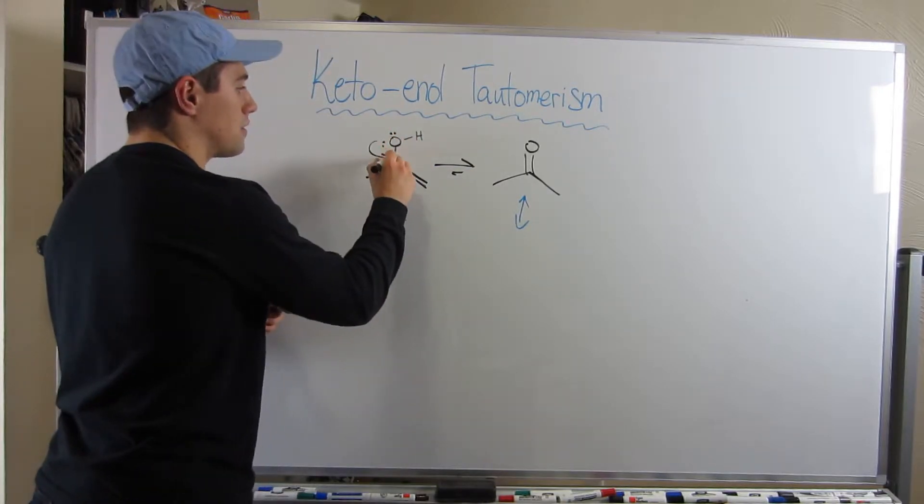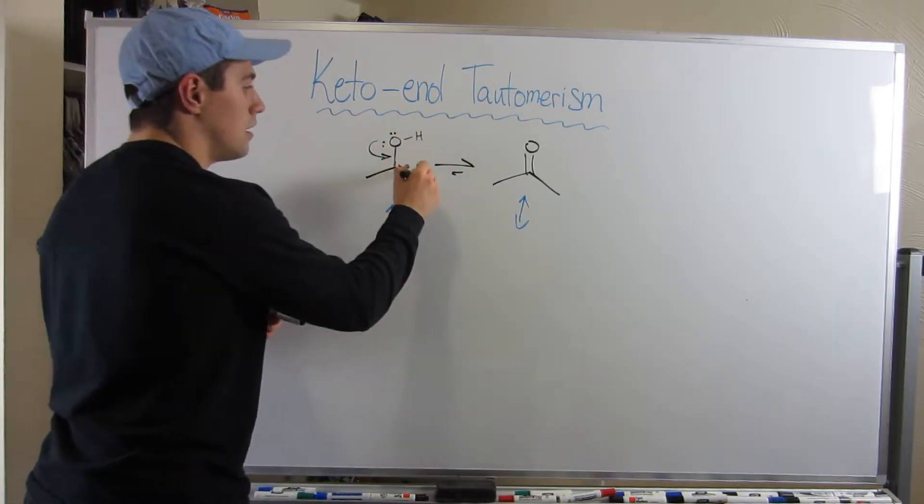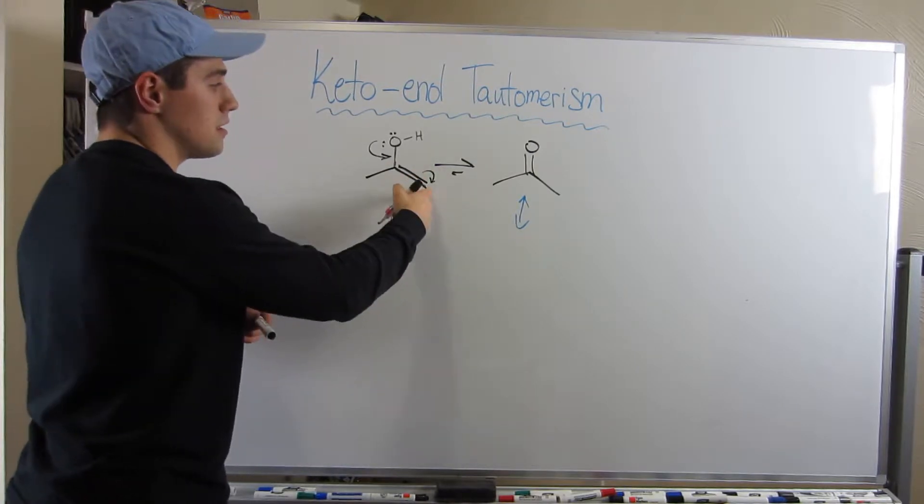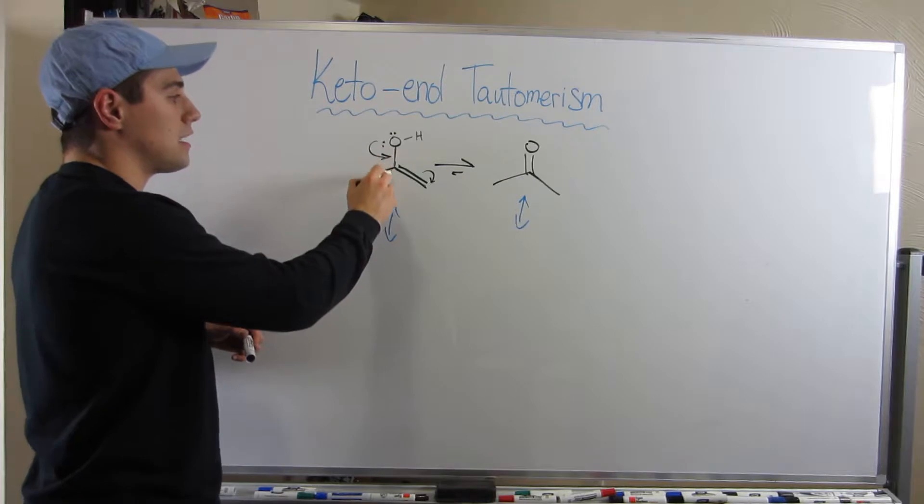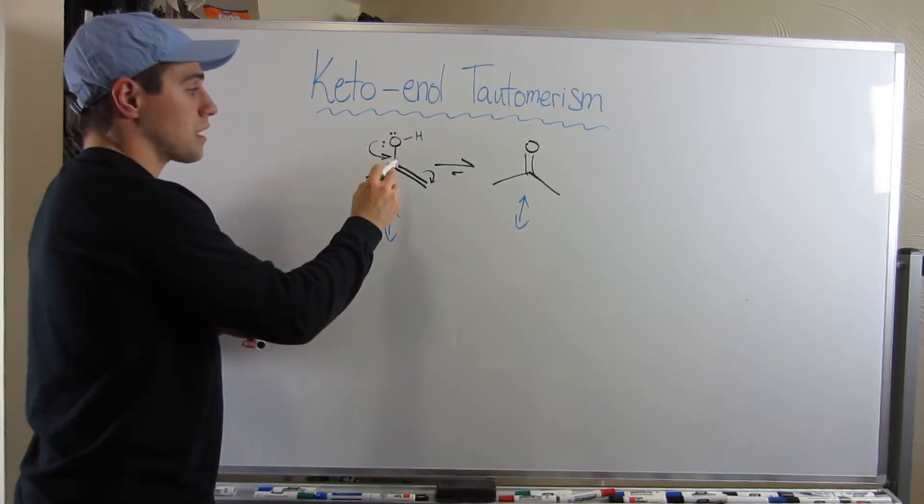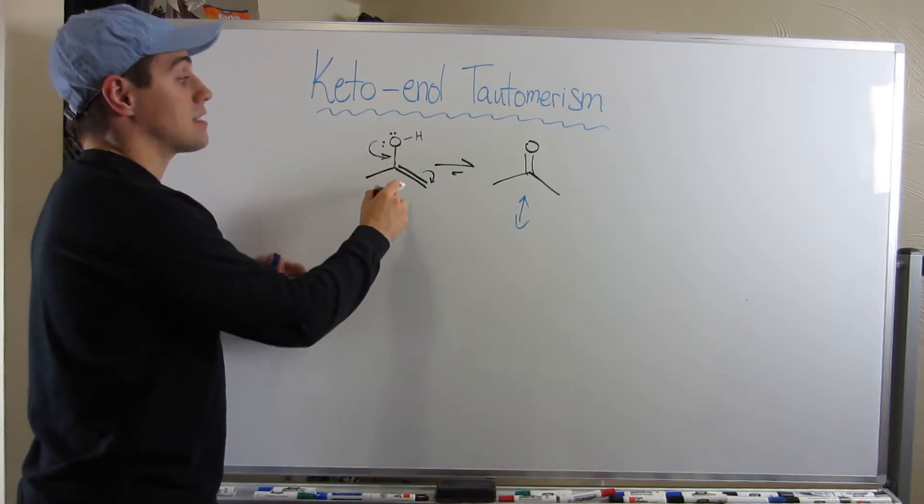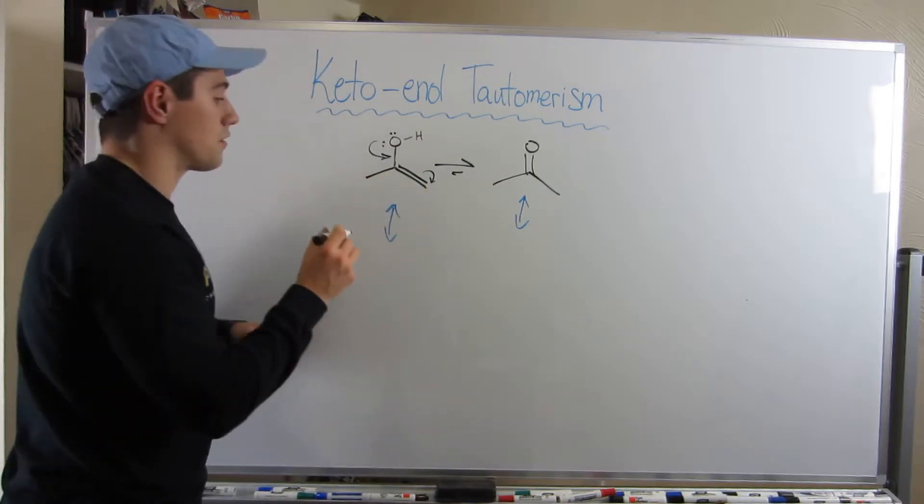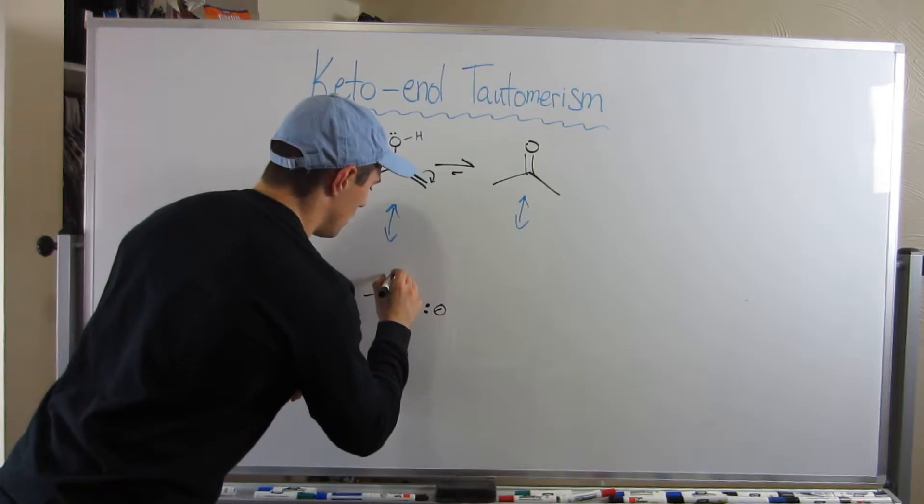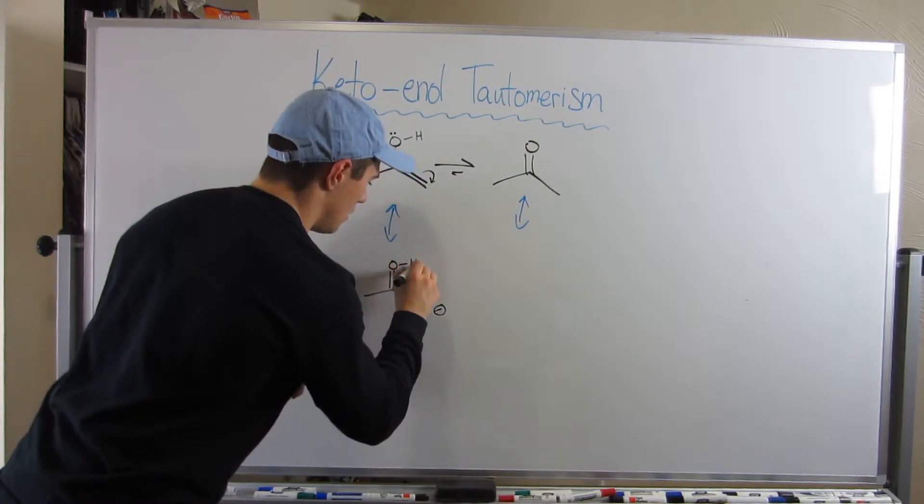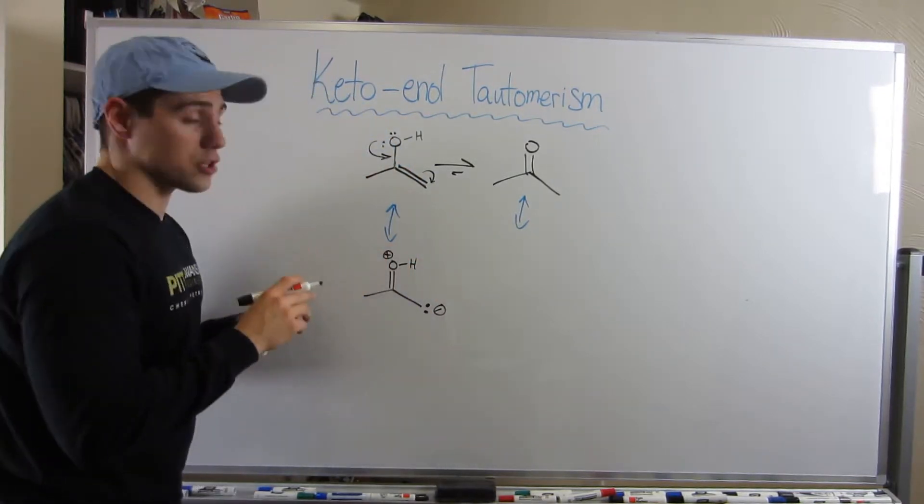On the enol, I can drop these electrons down and balance these electrons up onto carbon. Because if I make this double bond here, this carbon is going to break its octet rule unless I balance the electrons up as a lone pair on the carbon down there. There's one resonance structure of the enol.